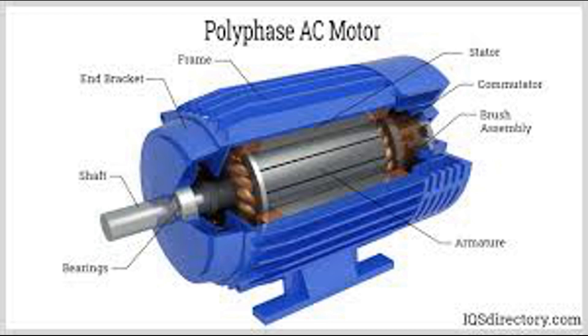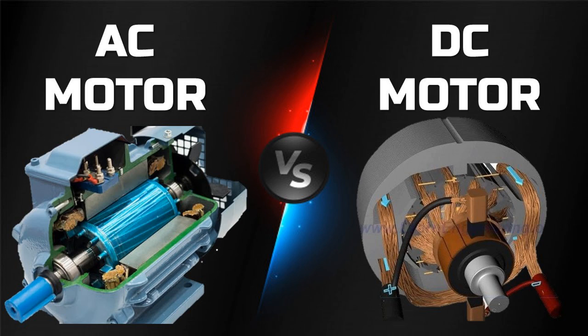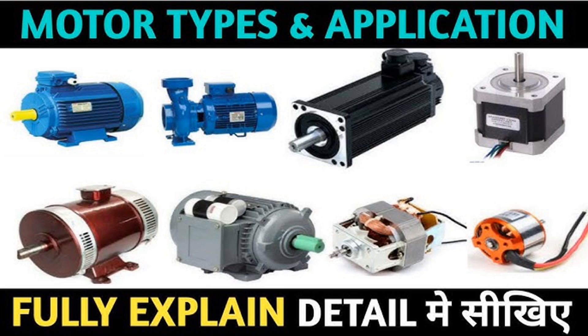An AC motor functions by converting electrical energy in the form of alternating current into mechanical energy. It operates based on the principle of electromagnetic induction, which generates rotational motion. The motor is connected to an AC power supply. Alternating current means the flow of electric charge periodically reverses direction, creating a changing magnetic field.